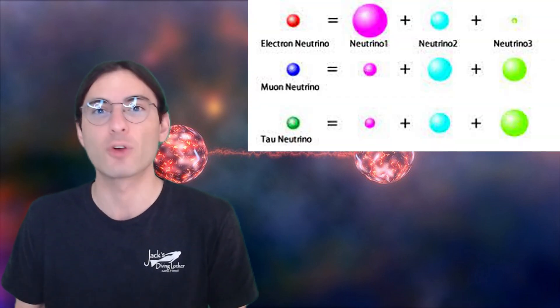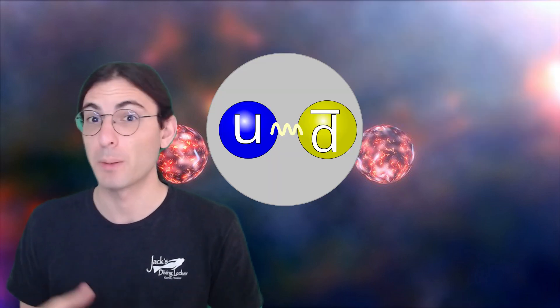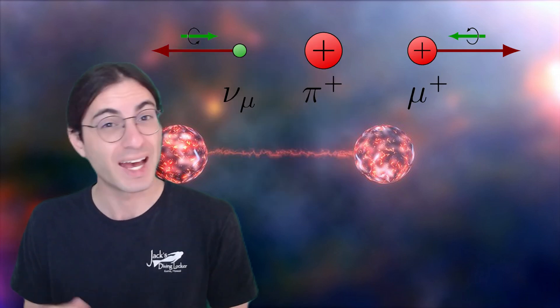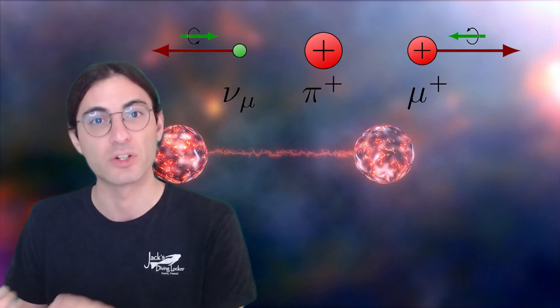Of course, it's the ever-weird neutrino. So let me paint you a picture. A positive pion is a type of short-lived subatomic particle with a mass of 139 mega-electron volts, and it primarily decays into an antimuon and a muon neutrino.